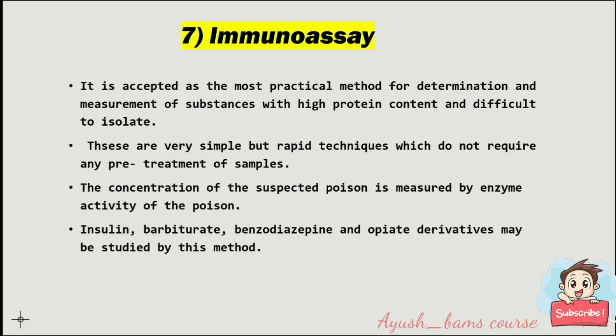Immunoassay is accepted as the most practical method for determination and measurement of substances with high protein content that are difficult to isolate. These are very simple but rapid techniques which do not require any pre-treatment of samples. The concentration of the suspected poison is measured by enzyme activity. Insulin, barbiturate, benzodiazepine, and opiate derivatives may be studied by this method.